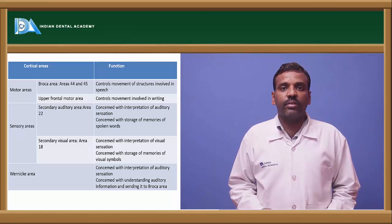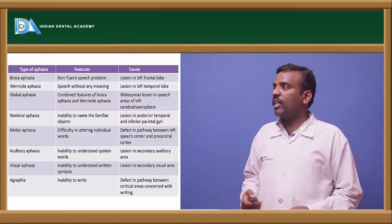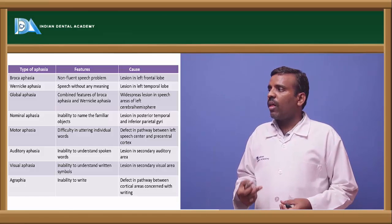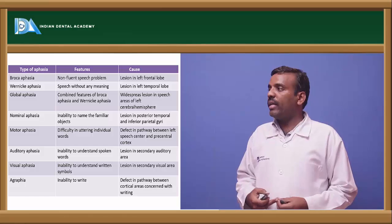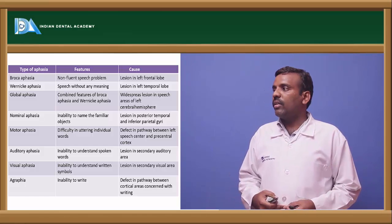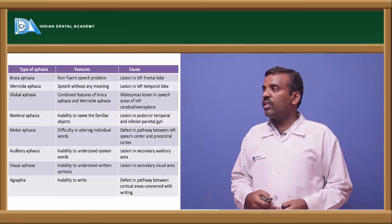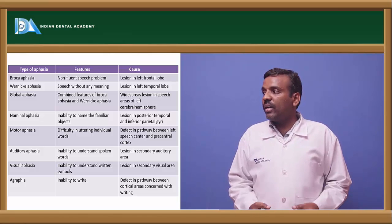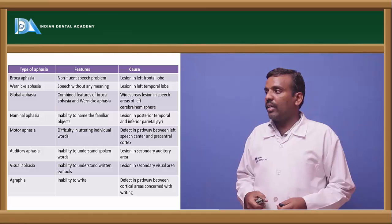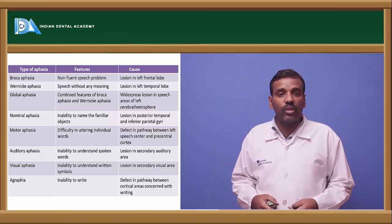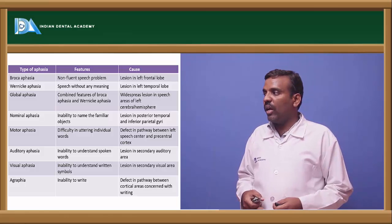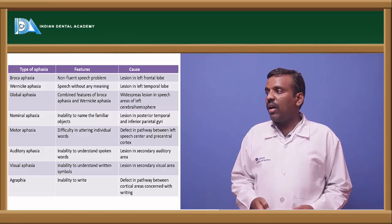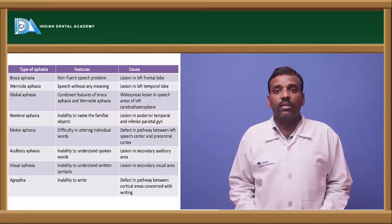Applied aspects of aphasia: Broca's aphasia is difficulty producing speech; Wernicke's aphasia is speech without meaning; global aphasia combines features of Broca's and other aphasias; nominal aphasia is inability to name familiar objects; motor aphasia is difficulty articulating individual words; auditory aphasia is inability to understand spoken speech; visual aphasia is inability to understand written symbols; agraphia is inability to write.